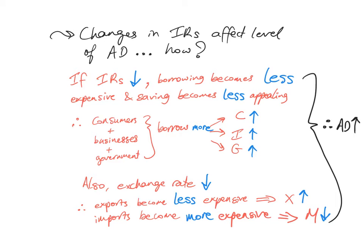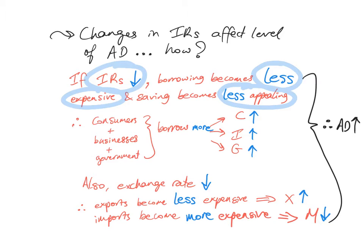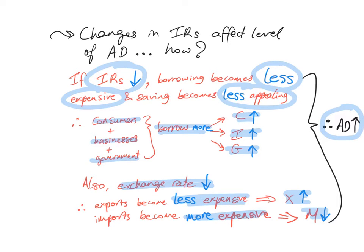What about when interest rates fall? Basically you just flip the direction of the arrows. If interest rates fall, borrowing becomes less expensive and saving becomes less appealing. Consumers will borrow more, therefore C rises; businesses will borrow more, therefore I rises; government will borrow more, therefore G rises. Also the exchange rate falls, so exports become less expensive and X increases, while imports become more expensive and M decreases. The net effect is that aggregate demand rises. Remember: interest rates and aggregate demand move in opposite directions.